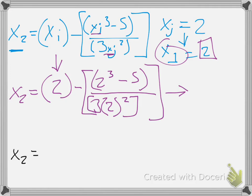x_2 equals 2 minus 1 over 4, because 2 cubed is 8 minus 5 is 3, and 3 times 2 squared is 12. So we have all that, so this is going to be 2 minus 1 quarter.